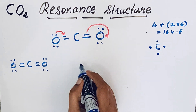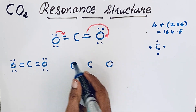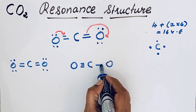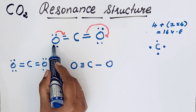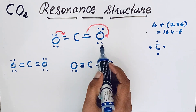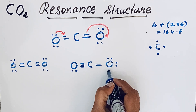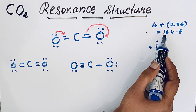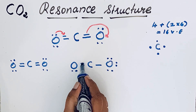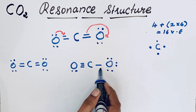To draw the second resonant structure, we keep the same atomic positions: C, then O, then O. Now there is a triple bond on one side and a single bond on the other. The oxygen with the triple bond has one lone pair, and the oxygen with the single bond now has three lone pairs. Counting valence electrons: 2, 4, 6, 8, 10, 12, 14, 16 — same number confirmed.